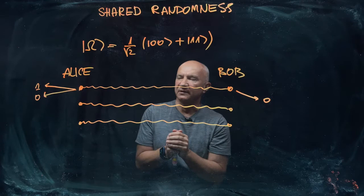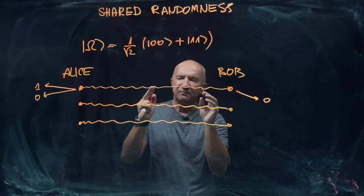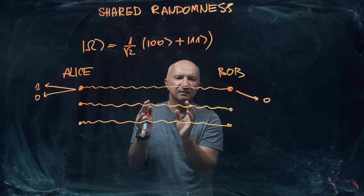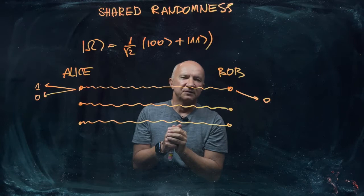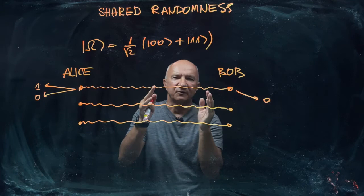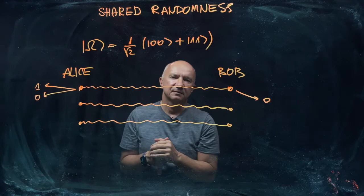You may say, well, maybe if she performs the measurement, she gets outcome zero or one, then Bob, whenever Bob measures his qubit in the computational basis, he also sees either zero or one. And so Alice will know what Bob will see. Well, that's certainly the case.